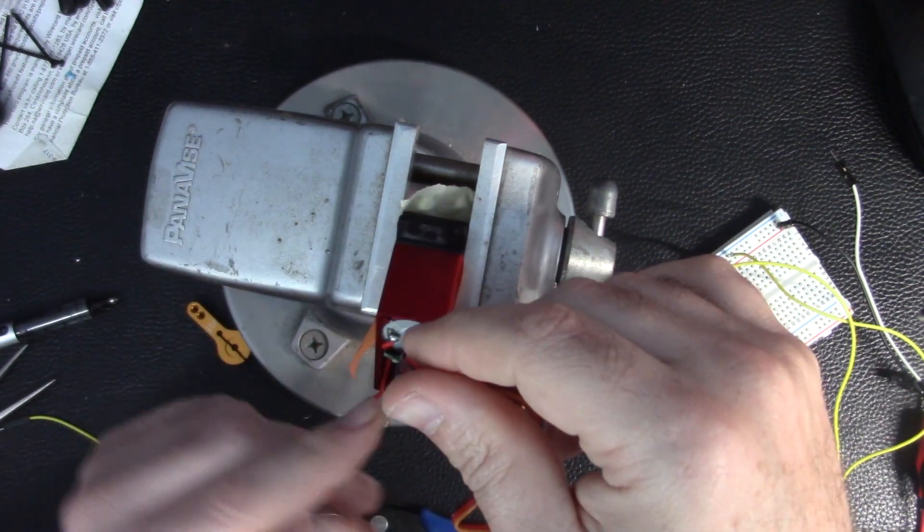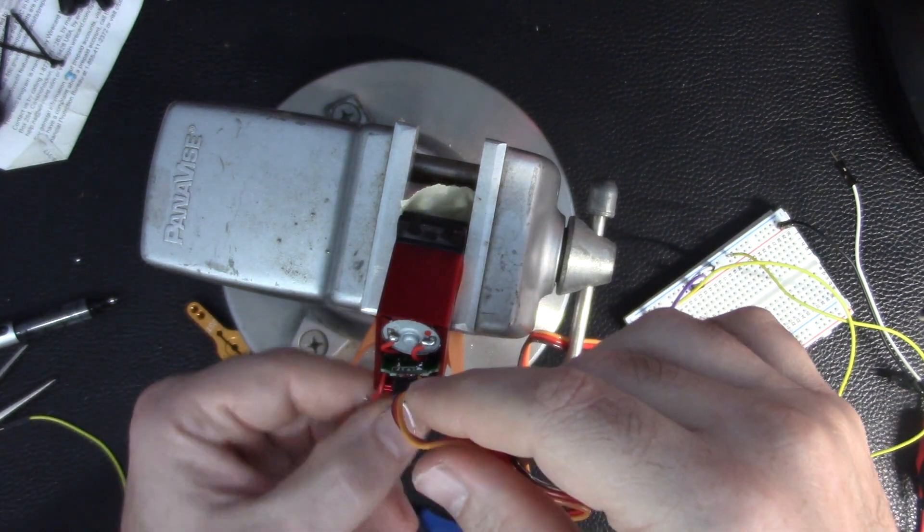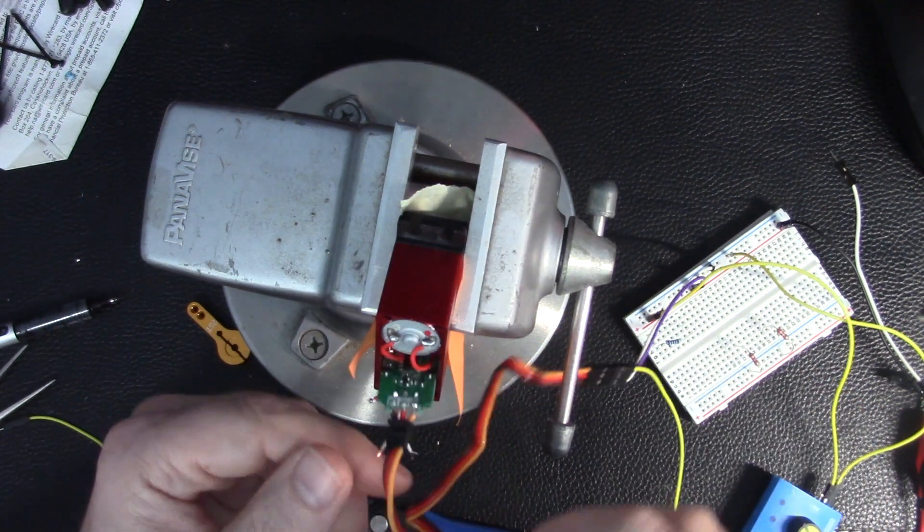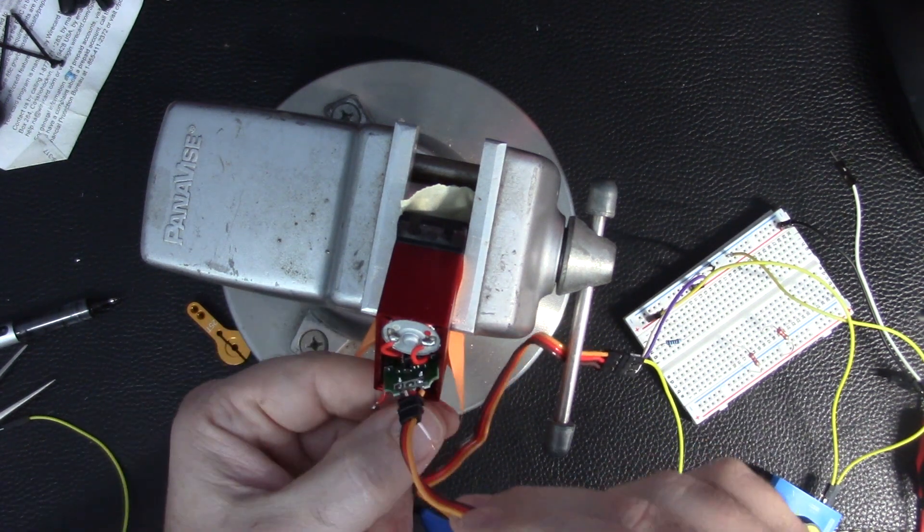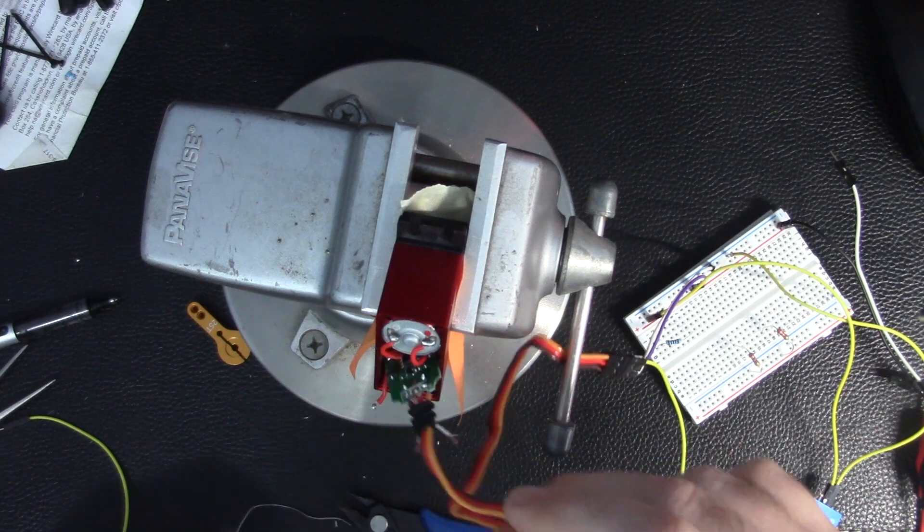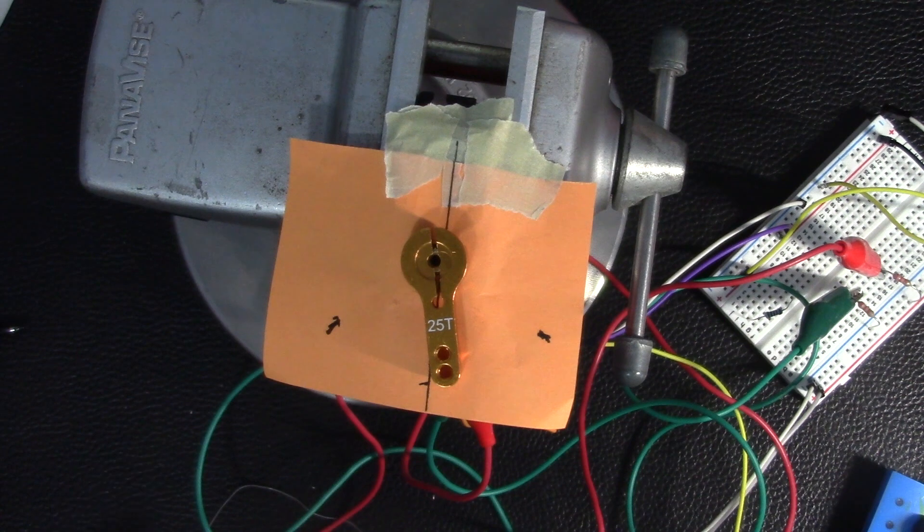Great, so now we have these two pigtails and then we have the two wires that go down into that potentiometer. We have that gray and the white and the two red ones. So let me grab some resistors and a breadboard and we can do some quick testing here.